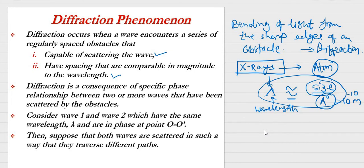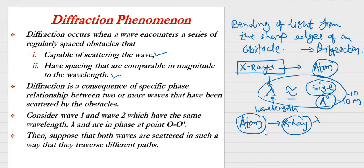Both conditions are satisfied with respect to atoms, so it is possible to have diffraction of X-rays from atoms — because the size of the atom is comparable to the wavelength of X-rays, and atoms are capable of scattering the wave. Diffraction is a consequence of specific phase relationships between two or more waves. Not a single wave alone can produce diffraction; a beam of X-rays is needed.